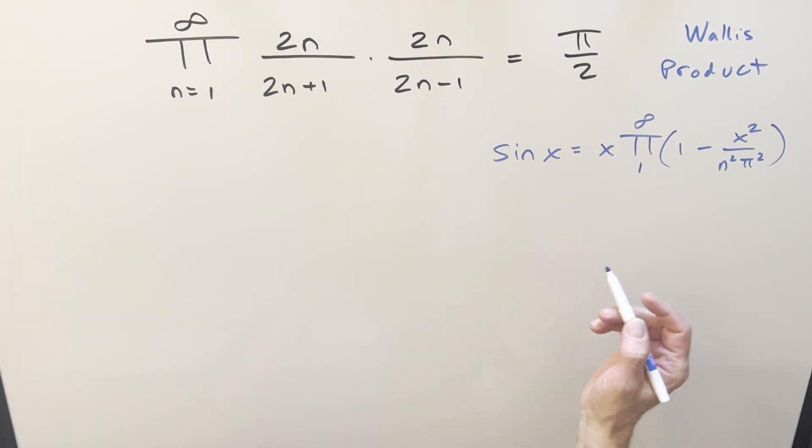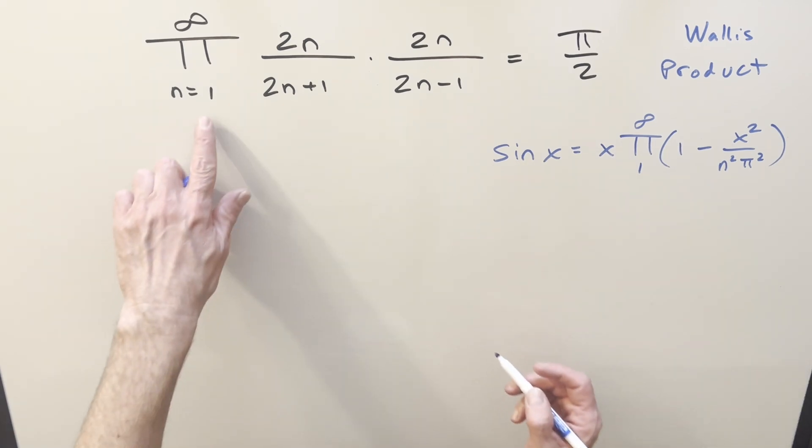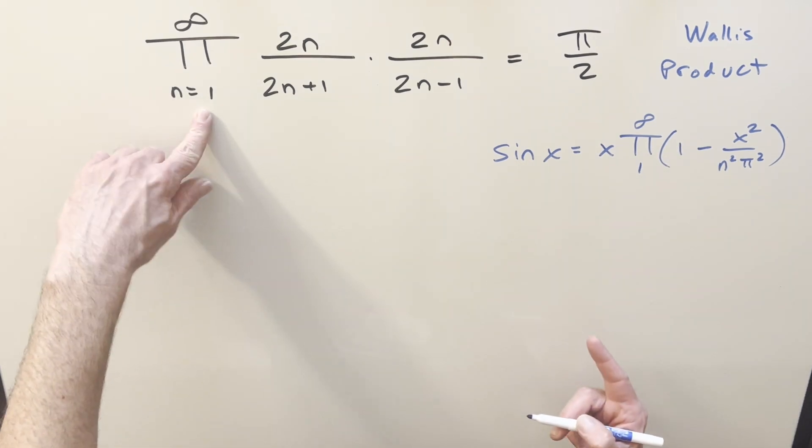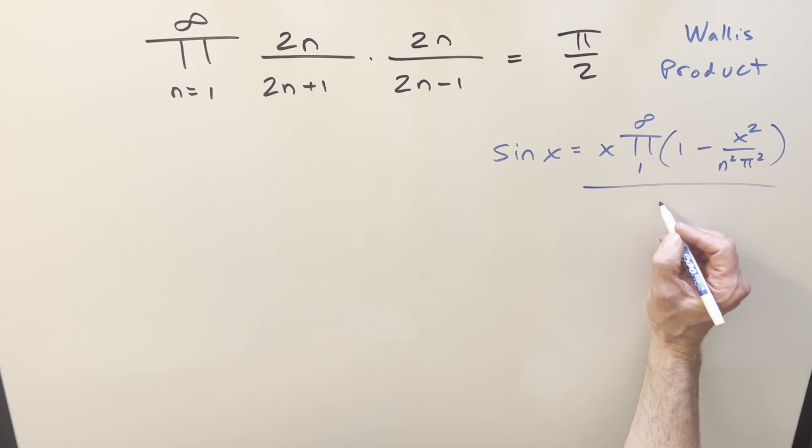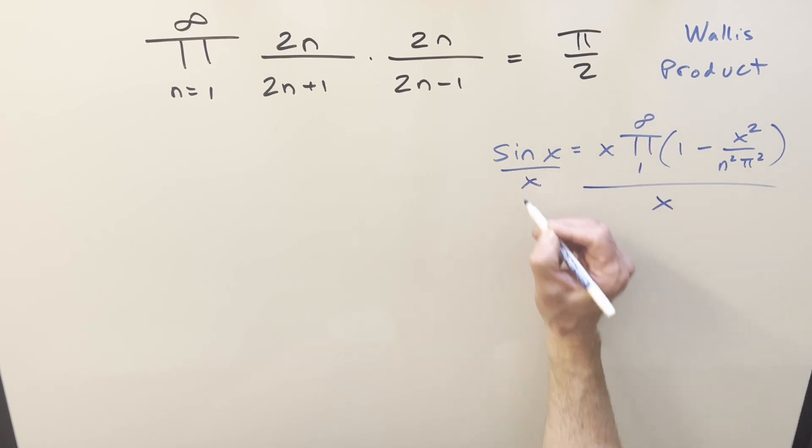So to get started, the first thing I want to do is I don't really want that x there. We have a product and we're trying to get it back looking like this. So let's just divide off the x, dividing an x on both sides. This way, we can cancel off the x right here.